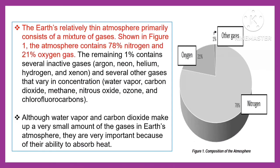The Earth's relatively thin atmosphere primarily consists of a mixture of gases. As shown in Figure 1, the atmosphere contains 78% nitrogen and 21% oxygen gas. The remaining 1% contains several inactive gases such as argon, neon, helium, hydrogen, and xenon, and several other gases that vary in concentration, such as water vapor, carbon dioxide, methane, nitrous oxide, ozone, and chlorofluorocarbons. Although water vapor and carbon dioxide make up a very small amount of the gases in Earth's atmosphere, they are very important because of their ability to absorb heat.